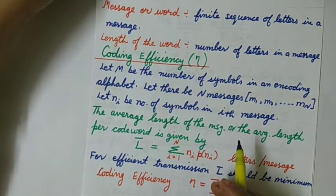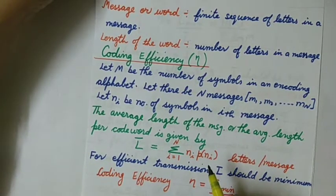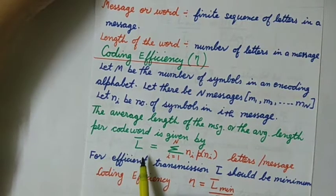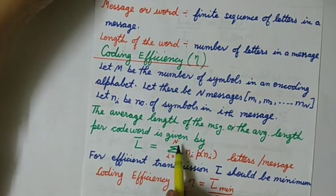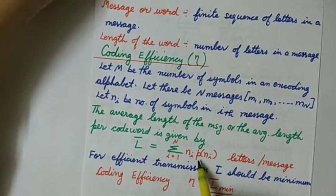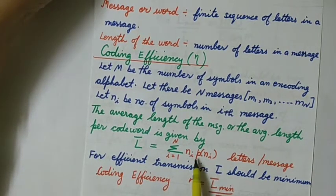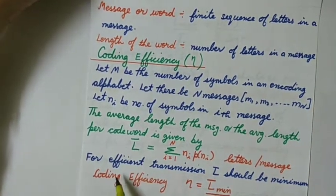As in the previous session, we calculated the formula for entropy, which represents the average information per individual message — found by the summation of the product of the probability of each message and its information content. Similarly, L̄, the average code word length, is written as the summation over all N messages of n_i multiplied by p(n_i), where n_i is the number of symbols in one code word.